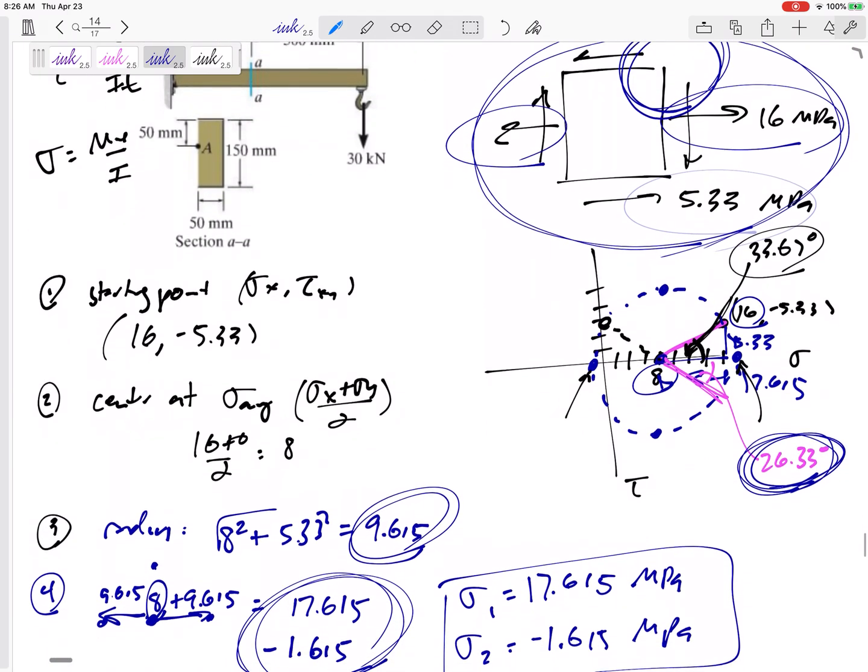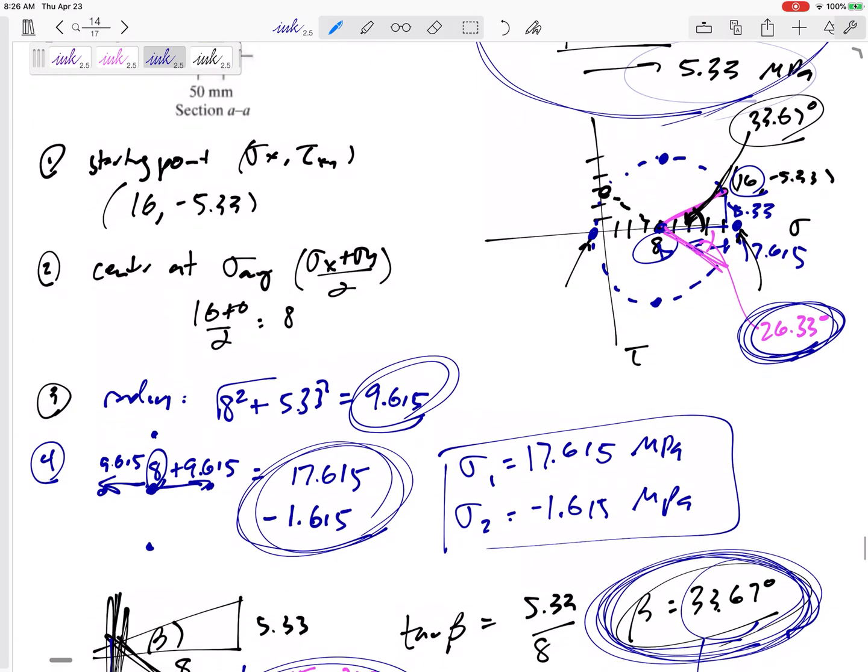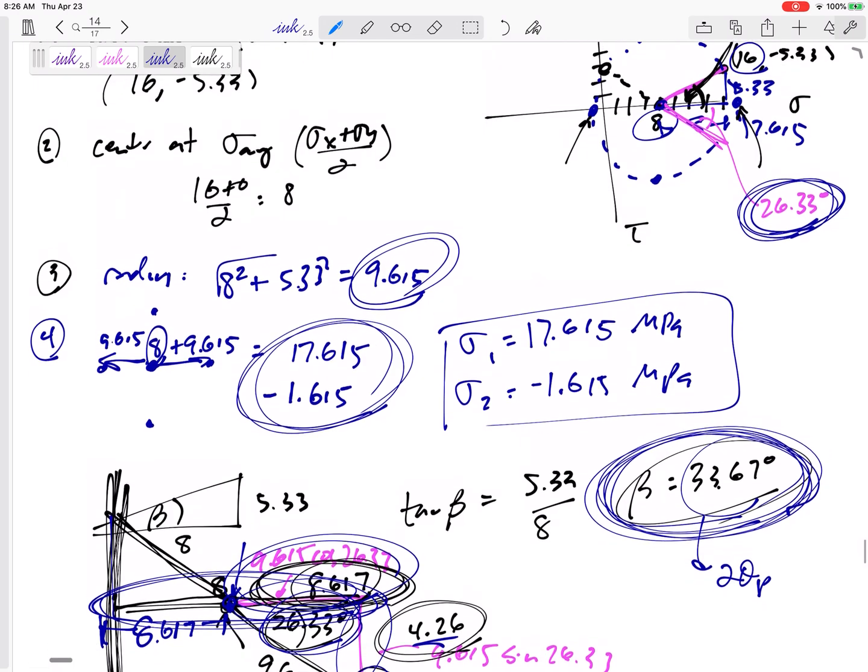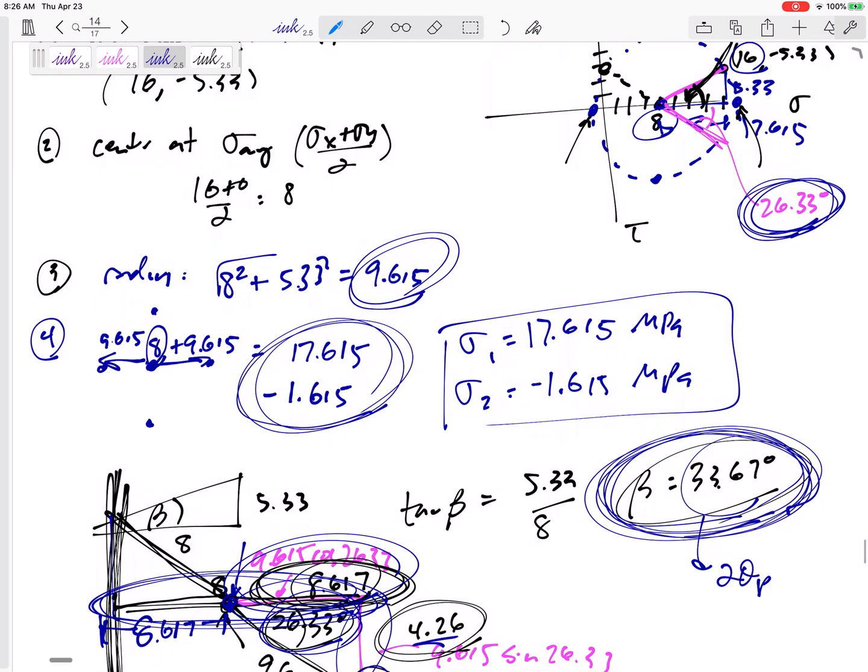Same steps. Draw your starting point. Draw your center. Calculate the radius. Go radius left, right, up, down. And go ahead and find, even if it doesn't ask for, find the angle that you're starting from.